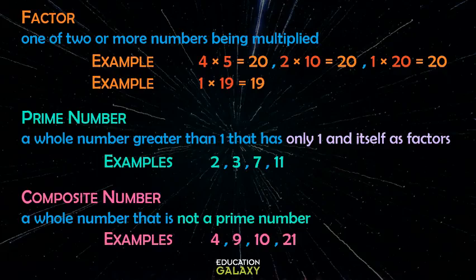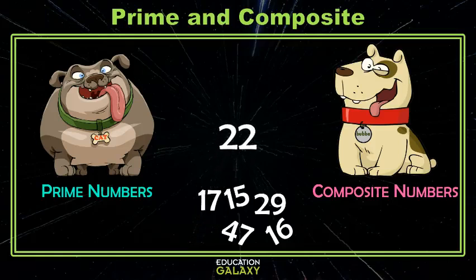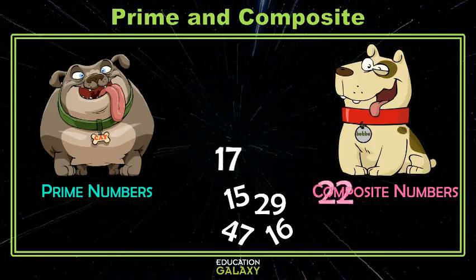But let's go back to sorting our pile. So what do you think about the number 22? Is it prime or composite? We know that it has 1 and 22 as factors, but what about 11 and 2? So since it has factors other than 1 and itself, we can give it to Bubba.